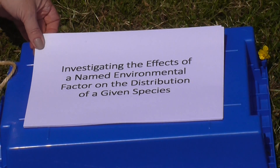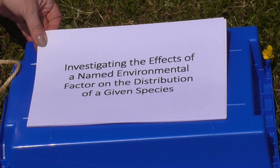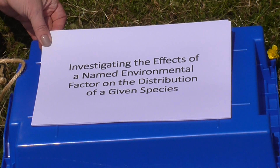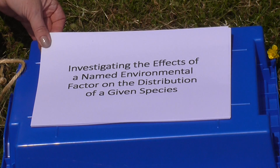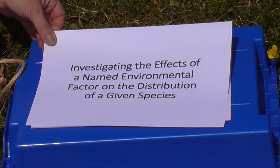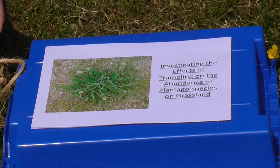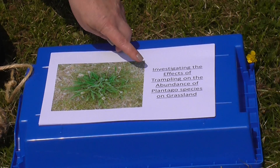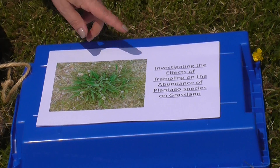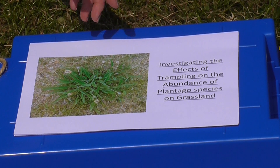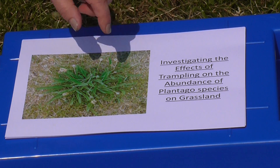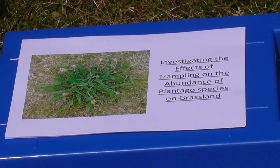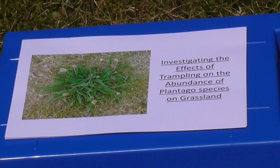Today we're going to investigate the effects of a named environmental factor on the distribution of a given species. This is one of the required A-level biology practicals, but it's not required for AS. The actual investigation we're going to do today is to investigate the effects of trampling, which is a biotic factor — but you could also investigate mowing or grazing — on the abundance of plantago species on grassland.